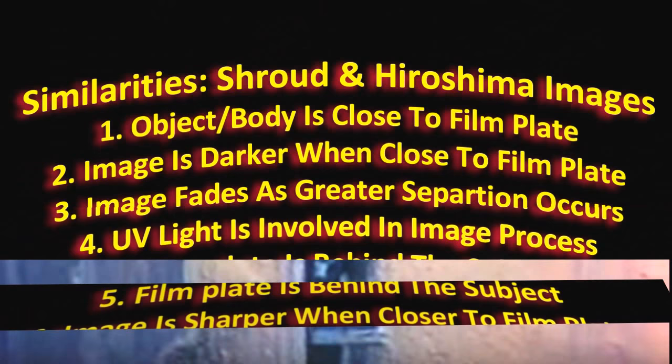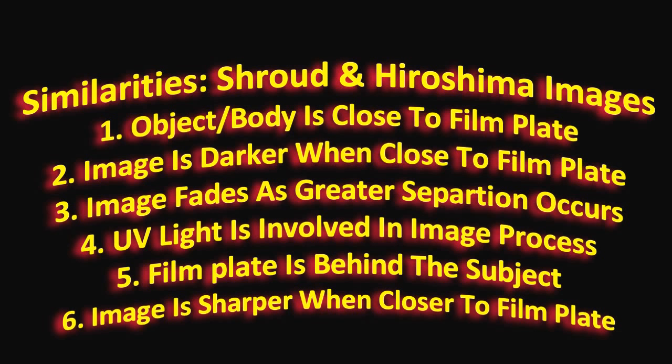These are the similarities between the shroud and the Hiroshima images: number one, the body or object is close to the film plate; number two, the image is darker when closer to the film plate — meaning the wall, sidewalk, or linen; number three, the image fades as greater separation occurs; number four, UV light is involved in the image process; number five, the film plate is behind the subject; and number six, both the Hiroshima images and the shroud image are sharper — have better resolution — when closer to the film plate.